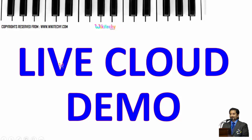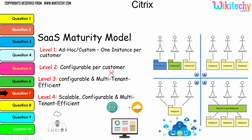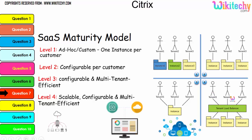We are going to see a live cloud demo. In this video you are able to see level one — one instance per customer — and level two, configurable per customer. You can see different colored instances: instance one, instance two, instance three. Level three is configurable with multi-tenant, with a load balancer, scalable, configurable, and multi-tenant — this is your cloud computing network or environment.